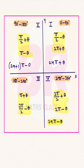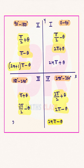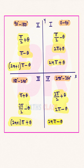Odd number times pi minus theta — where 2n+1 refers to an odd number — lies in the third quadrant. If anyone asks which quadrant 7 pi minus theta lies in, this is odd number times pi minus theta, so it lies in the second quadrant. Similarly, odd number times pi plus theta lies in the third quadrant. For example, 9 pi plus theta lies in the third quadrant because this is odd number times pi plus theta.